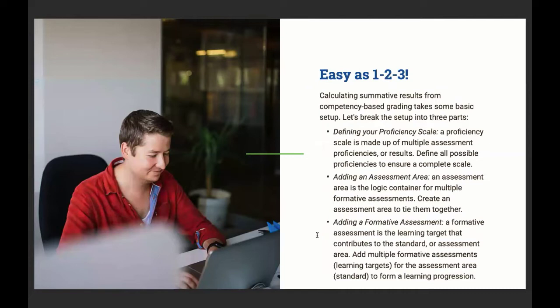Calculating summative results from comments-based grading takes some basic setup. Let's break the setup into three parts. First, defining your proficiency scale — a proficiency scale is made up of multiple assessment proficiencies or results; define all possible proficiencies to ensure a complete scale. Second, adding an assessment area — an assessment area is a logic container for multiple formative assessments; create one to tie them together. Third, adding a formative assessment — a formative assessment is the learning target that contributes to the standard or assessment area; add multiple formative assessments to form a learning progression.